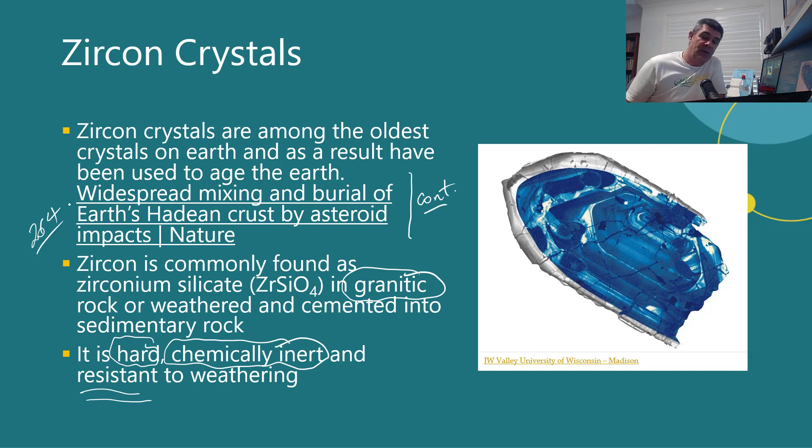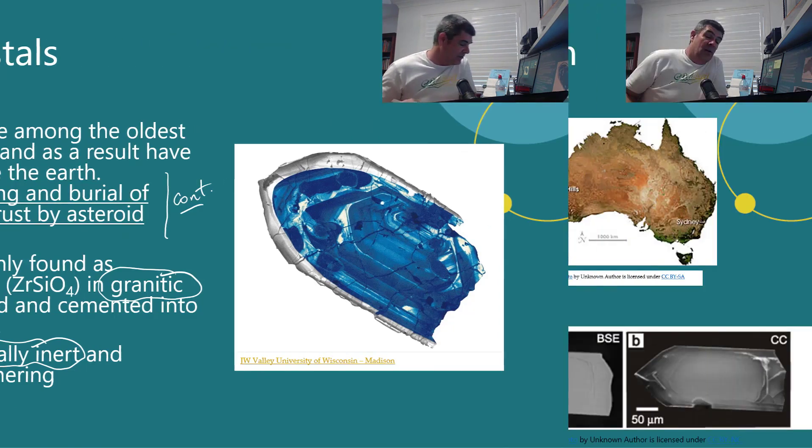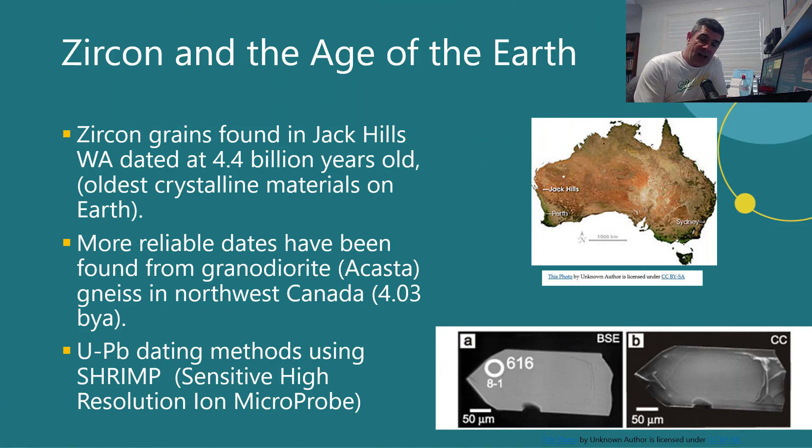So zircon is very important. It's important because it's part of the continental crust. It's important because it's found in a lot of different types of rock material. And it's important because it can be used to age the Earth. This has also happened here in Australia, around the Jack Hills region in Western Australia. We've actually found some zircons that have been dated to about 4.4 billion years old. And hence that represents the oldest crystalline material on the Earth.